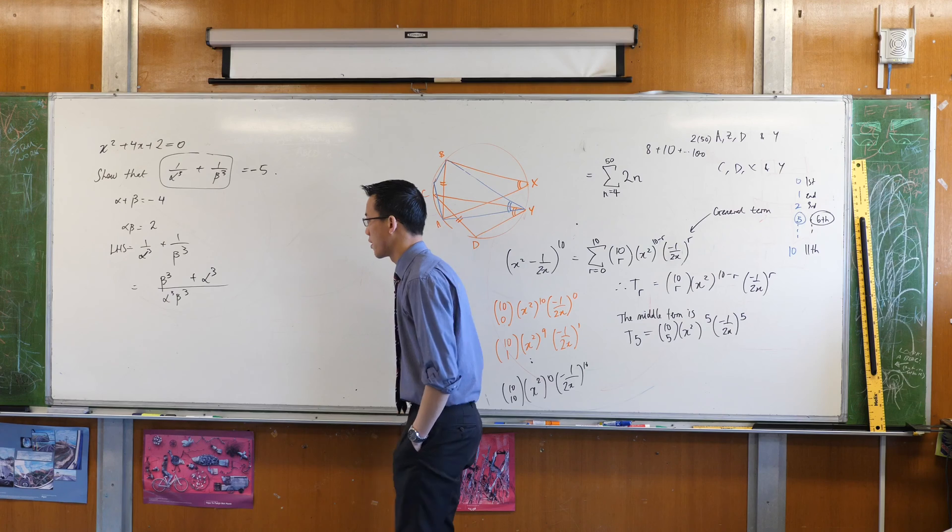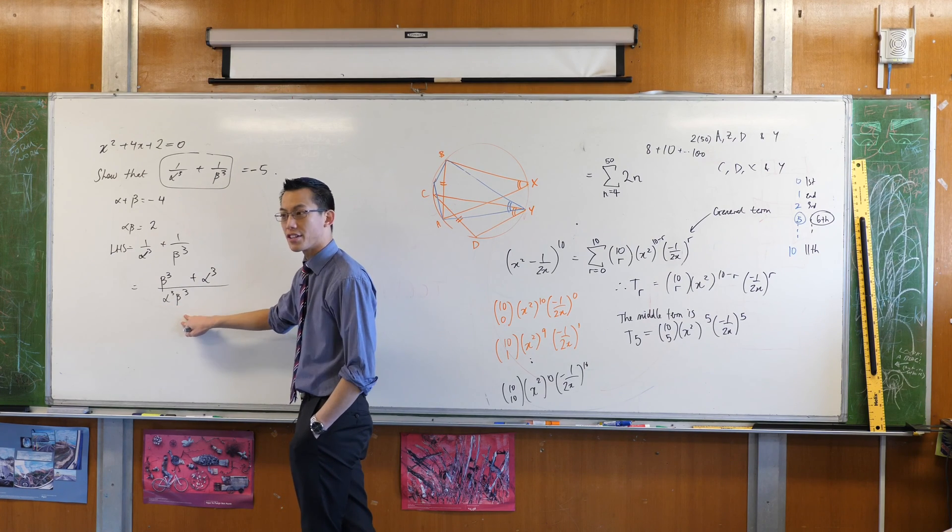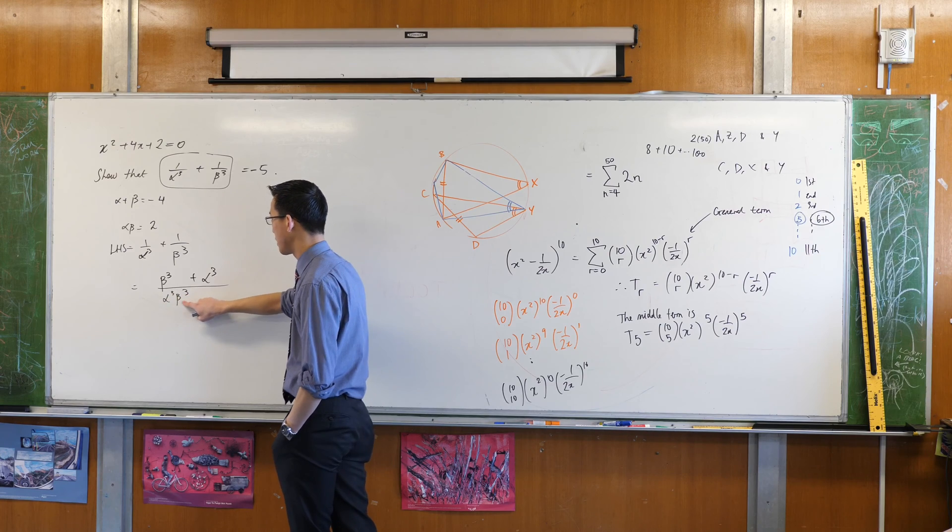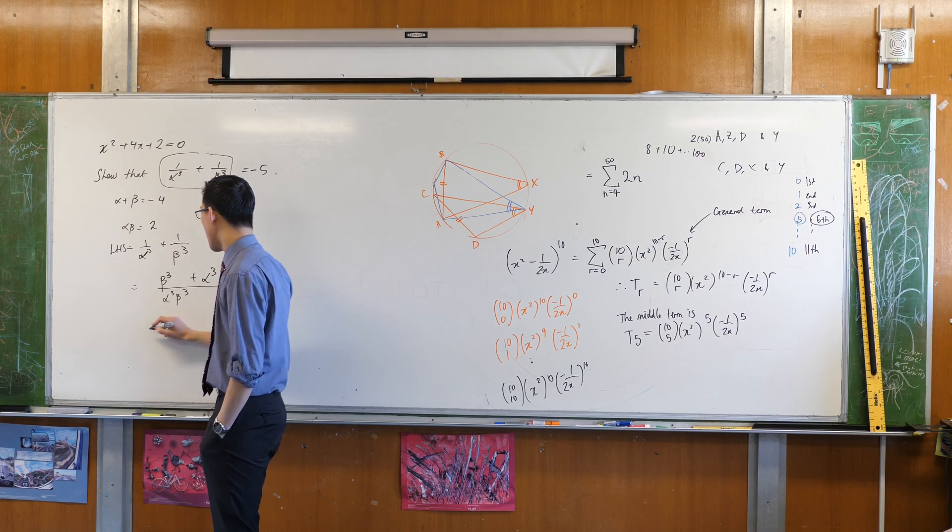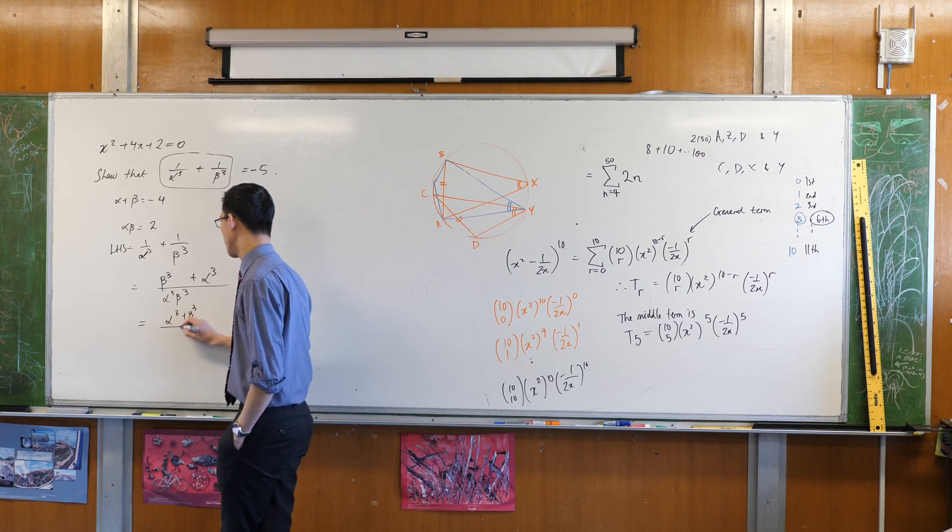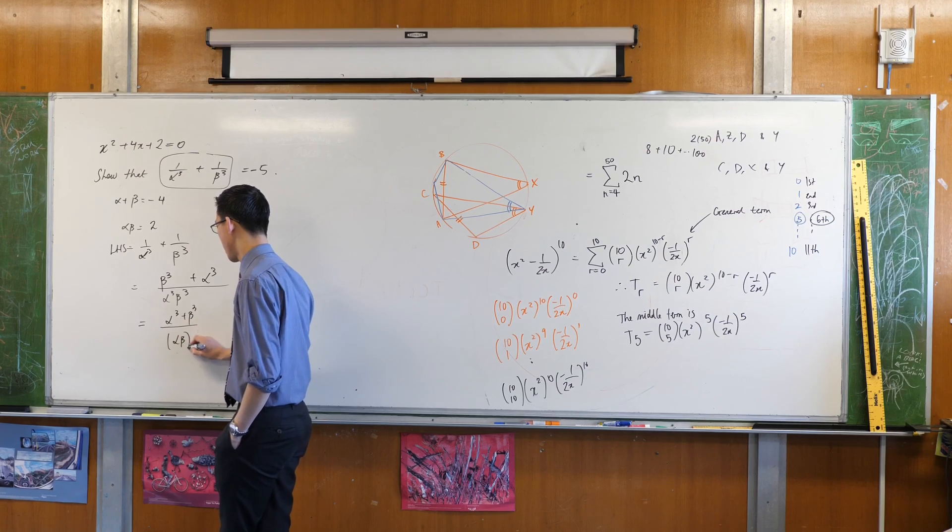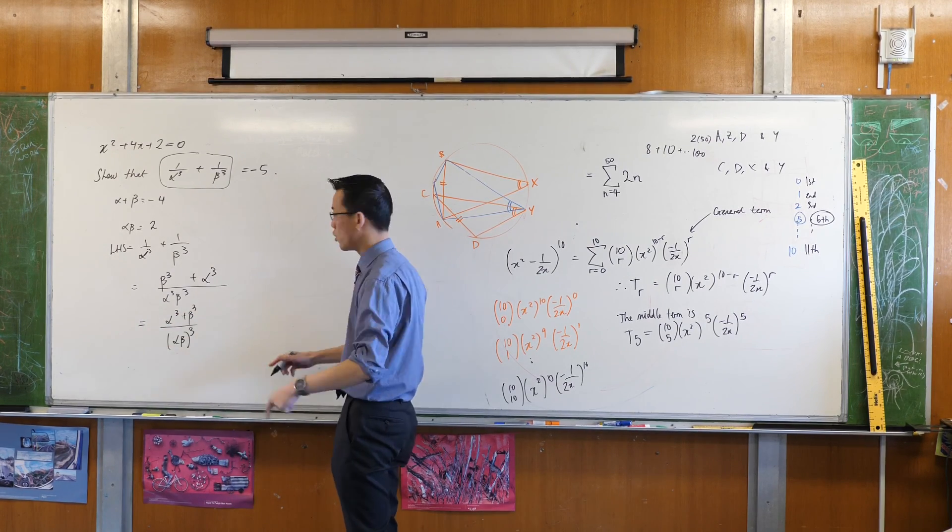Now before I move any further, this thing down at the bottom, I can work out directly because something cubed times something cubed is this all cubed. Do you agree? So I can use that, I will rewrite the bottom like so. Now this is just me mentally filing away. Okay I know what to do with that, all good.